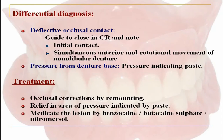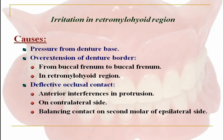For differential diagnosis, deflective occlusal contact could be due to the initial contact when guiding to close in centric relation, noting initial contact and simultaneous anterior and rotational movement of the mandibular denture. Pressure from the denture base can be identified using pressure indicating paste. Treatment includes occlusal corrections by remounting, relief in the area of pressure shown by the paste, and medicating the lesion with benzocaine, butacaine sulfate, or nitromersol.